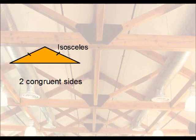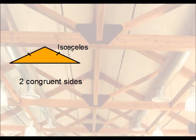An isosceles triangle is a triangle that has two congruent sides. Oftentimes they are marked, or a measurement will be written where the measurement for one side is identical to the other side. Typically, if two sides are marked, those are the ones that are congruent or equal in length. The third one, if it's not marked, is not the same length as the other two.